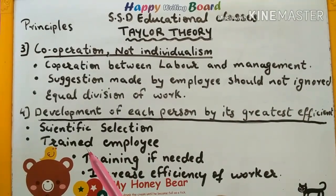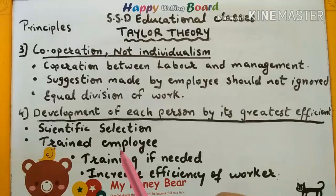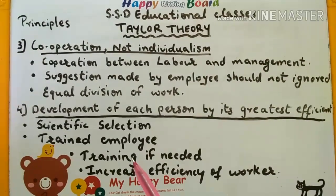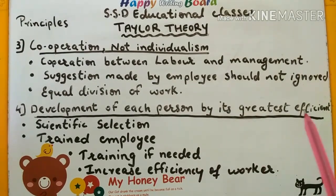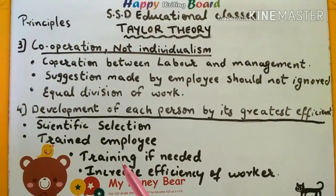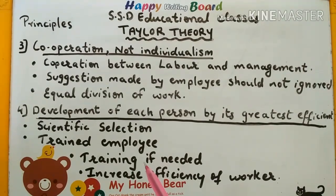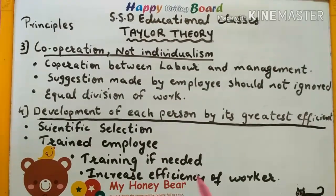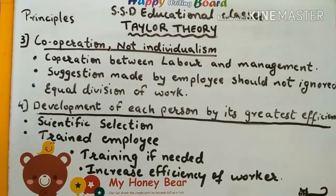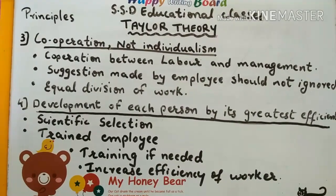After selection, we need to train employees. If further training is needed, we can also provide it. To develop each person's greatest efficiency, they must be trained through different campuses, selections, trainings, conferences, and seminars. When employees are trained, they increase their efficiency and workers can work to their fullest capacity, enabling both workers and managers to develop and the organization to achieve its goals.